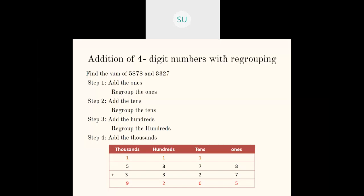The second number: seven in ones, two in tens, three in hundreds, and three in thousands. Then we start adding the ones. In ones place I have eight and seven. Seven plus eight is 15, so I got 15 ones. Now these 15 ones I'll regroup as one ten and five ones. So five ones I'll write in the ones column and one ten I'll carry over to the tens place.